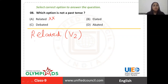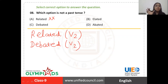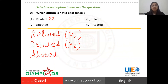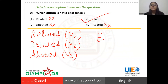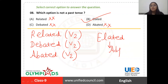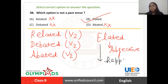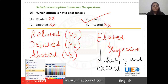If I talk about 'debated', it is also the past form of the verb 'debate'. 'Abated' is also the past form of the verb 'abate'. So these options can be ruled out. We are left with only one option: 'elated'. No doubt it has 'ed' at the end, but it is not a verb — it is an adjective. 'Elated' means happy and excited. So the correct answer is option B: 'elated'.